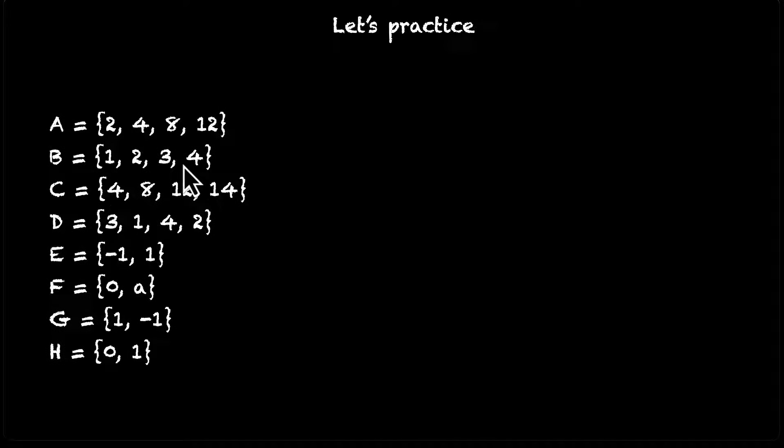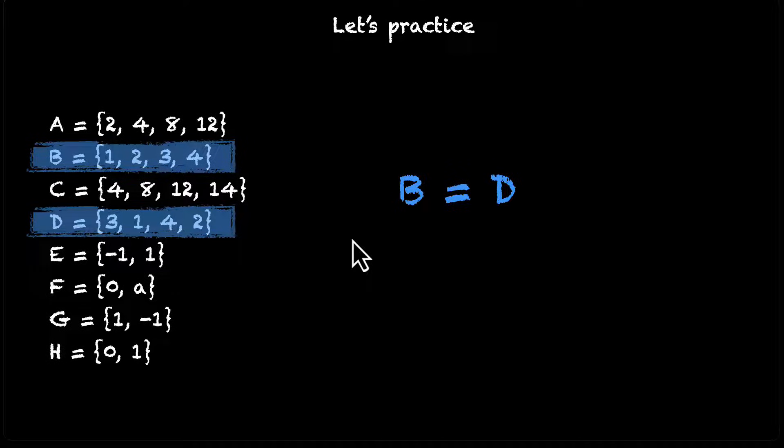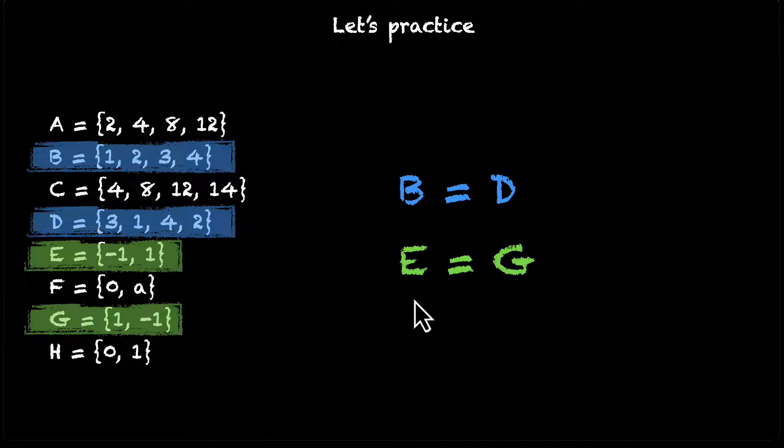For B, we have 1, 2, 3, 4. D also has 1, 2, 3, and 4. So B and D, they're equal sets. Any other pair that we can find? F and H are almost equal. They have 0. But here we have 1, here we have A. So we'll have to reject these two. E and G, minus 1 and 1, minus 1 and 1. Yes. E and G are equal. So E is equal to G. These two pairs are equal to each other.